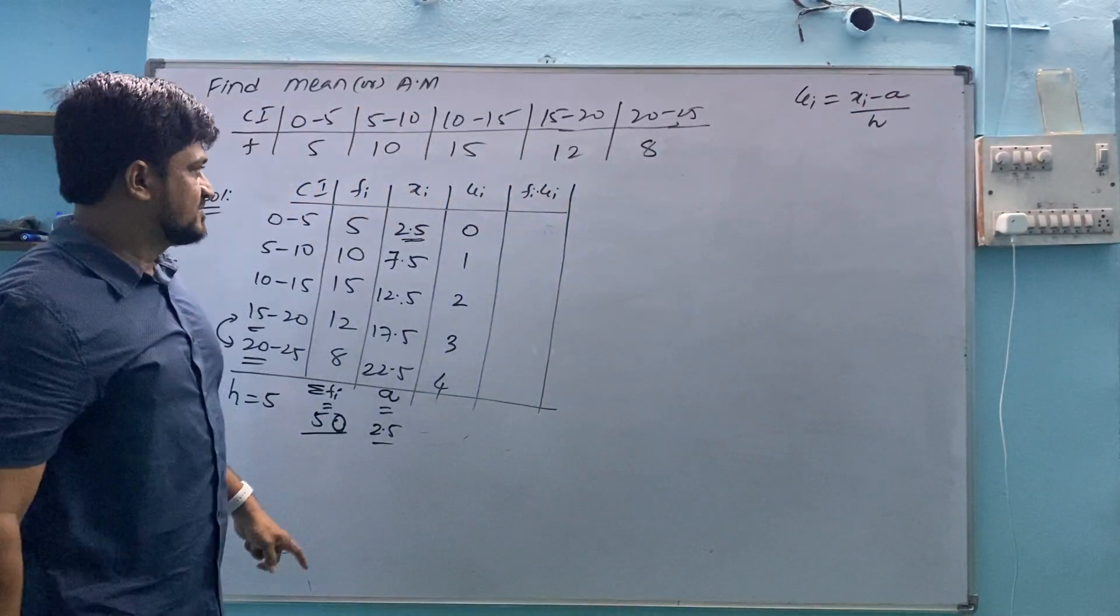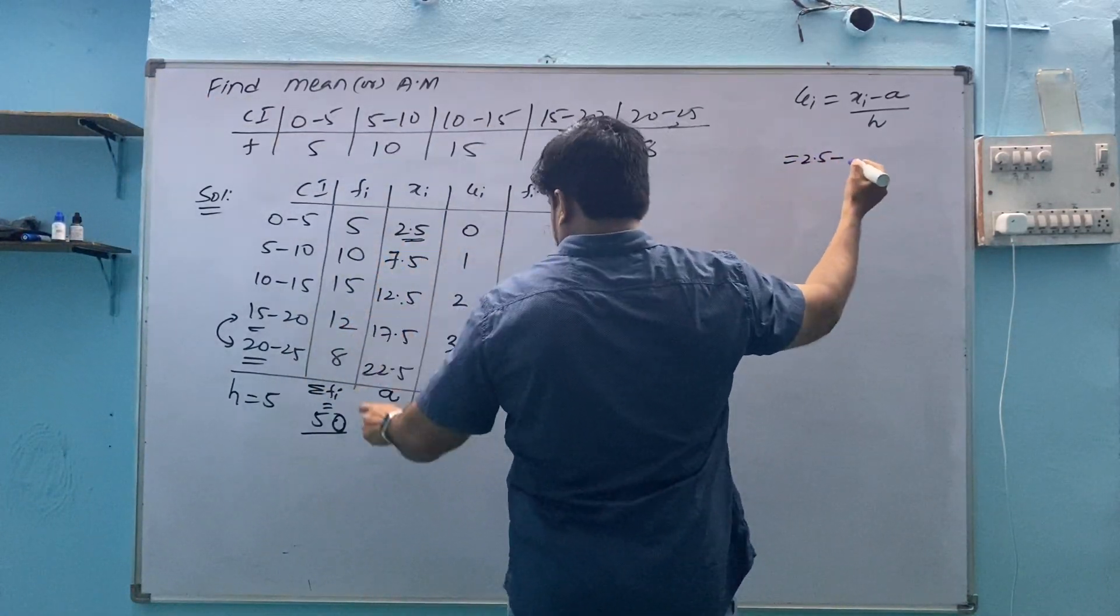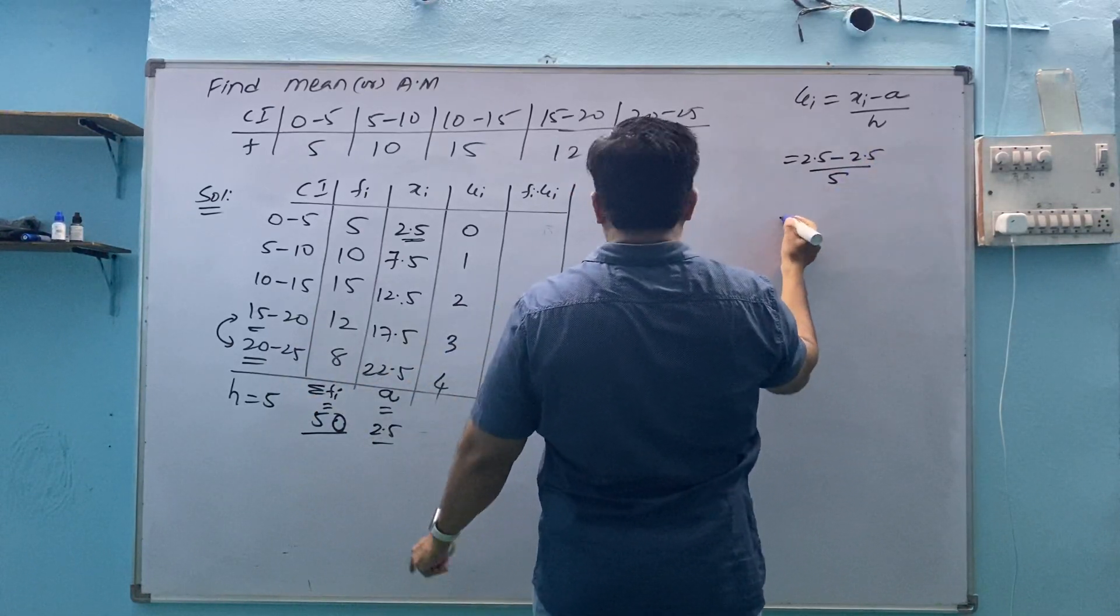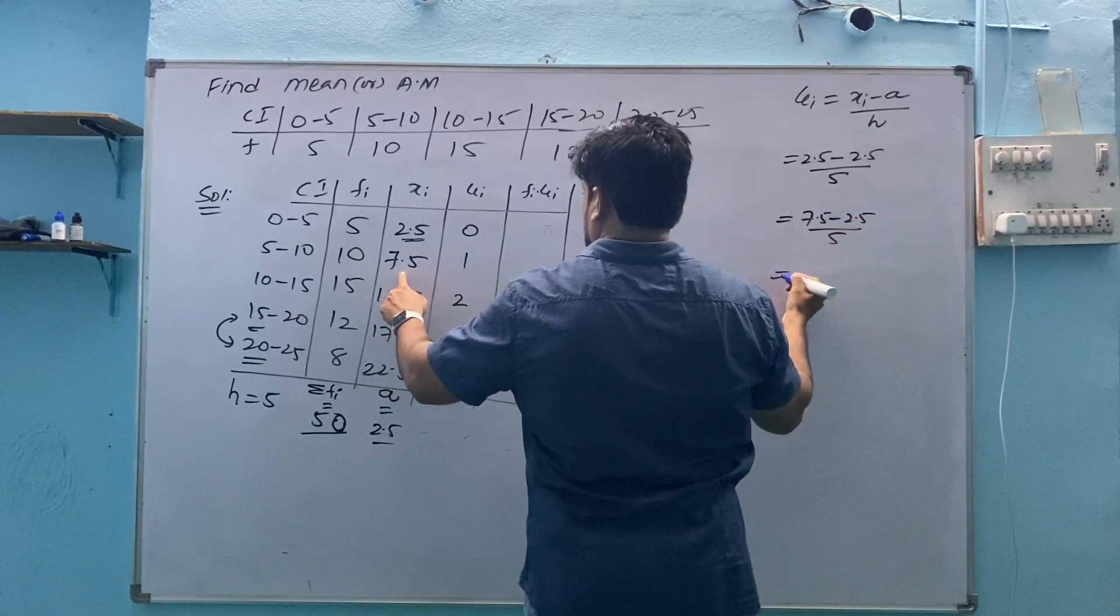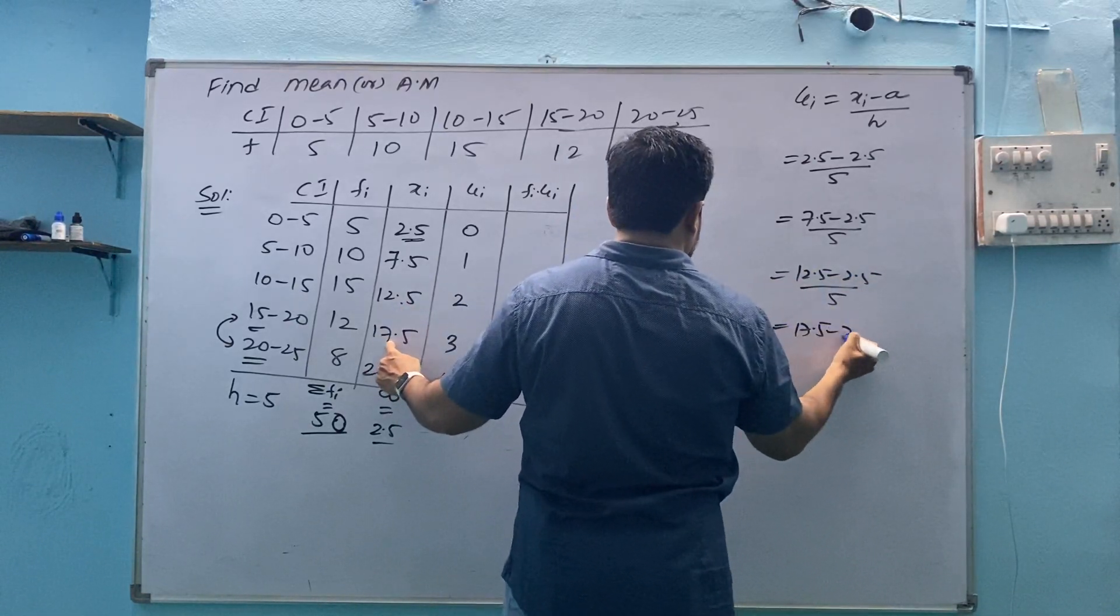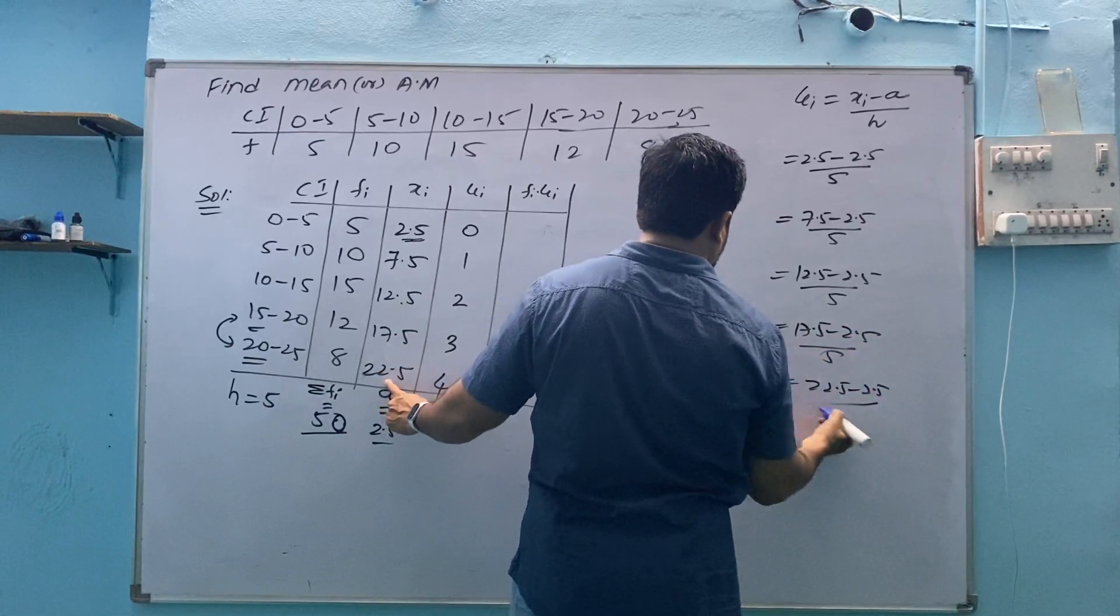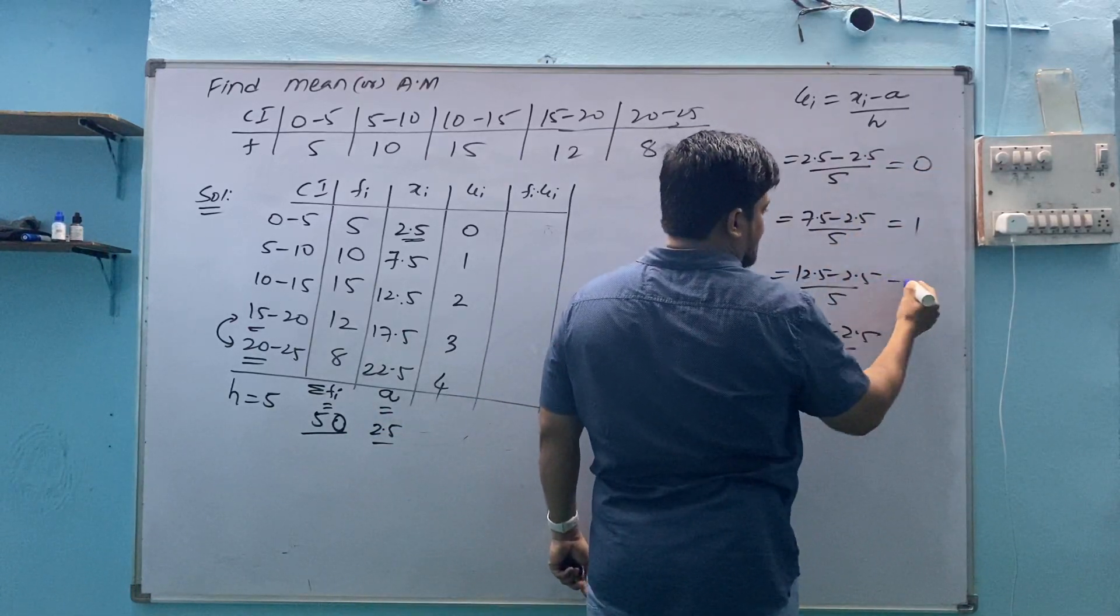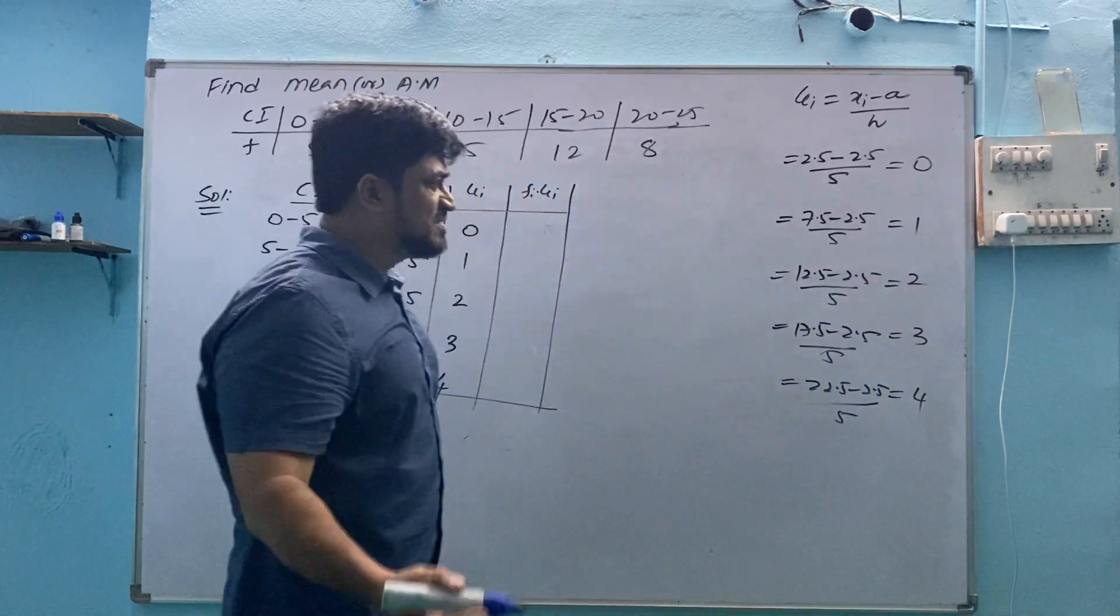Ui equals to Xi minus A divided by H. For the first Xi: 2.5 minus A (which is 2.5) by H (which is 5). Similarly second value: 7.5 minus 2.5 by 5. Third value: 12.5 minus 2.5 by 5. Fourth value: 17.5 minus 2.5 by 5. Fifth value: 22.5 minus 2.5 by 5. If we use calculator to find this: 0 by 5 is 0, 5 by 5 is 1, 10 by 5 is 2, 15 by 5 is 3, 20 by 5 is 4.